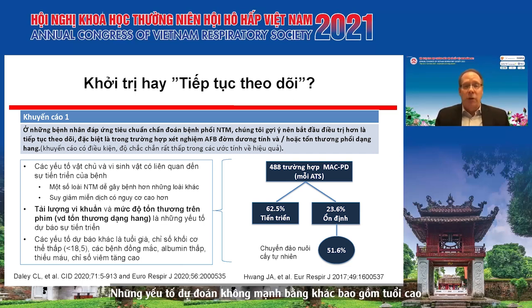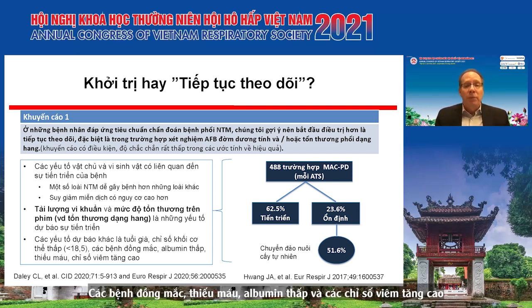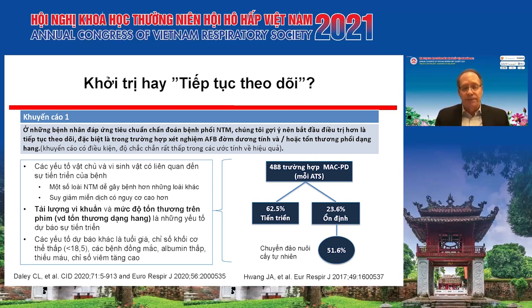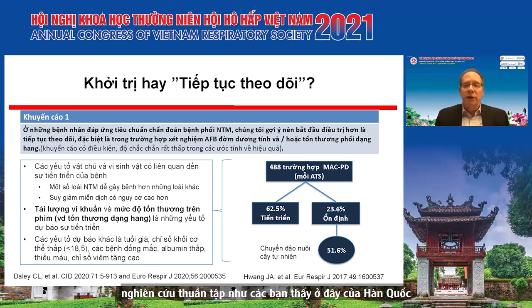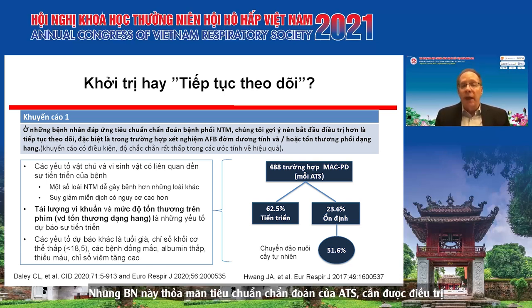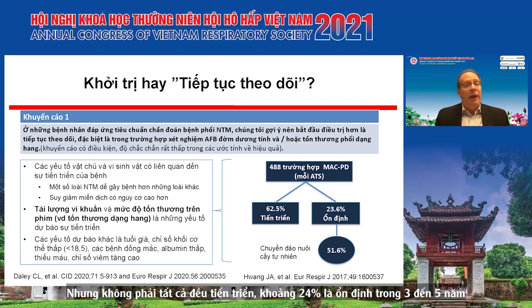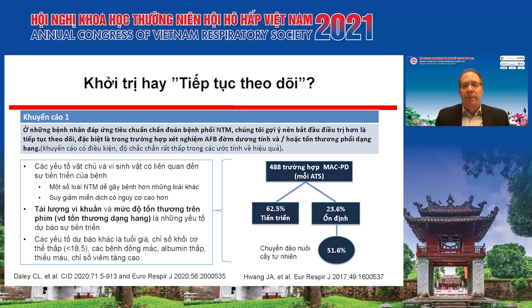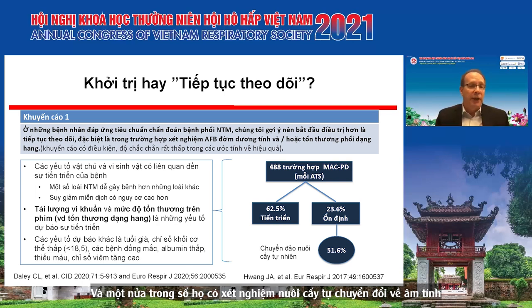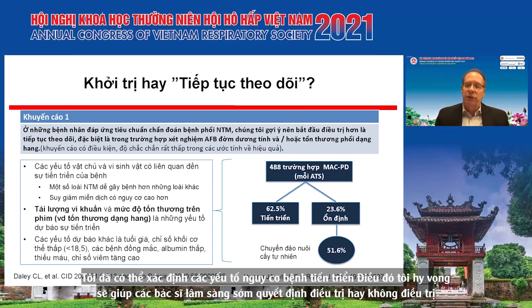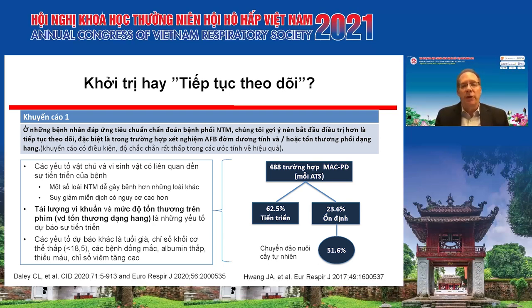Other predictors of progression include older age, low body mass index (usually less than 18.5), other comorbidities, low albumin, anemia, and elevated inflammatory indices. These risk factors come from cohort studies, including one from Korea that enrolled almost 500 patients with MAC pulmonary disease who met ATS criteria. Followed for a median of three years, about 63% progressed. But about 24% were stable over three to five years, and half of those spontaneously converted their cultures to negative. These risk factors help clinicians decide early on whether to treat or not.